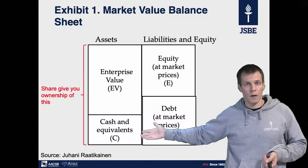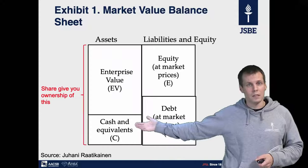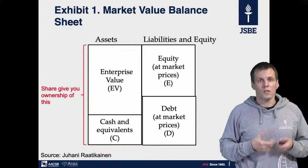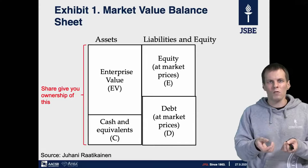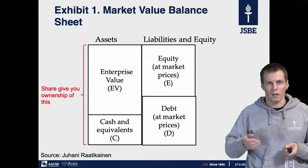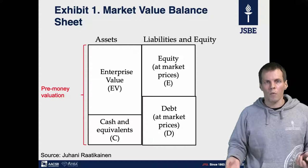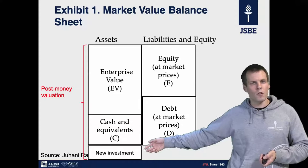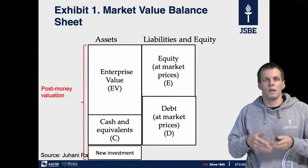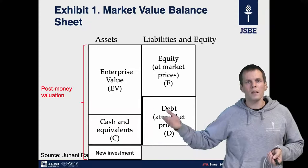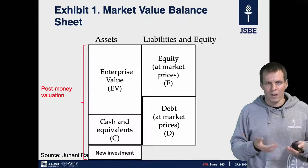A share gives you ownership of the full thing — the enterprise value and also the cash. So if you have one share out of 100 and there is money in the bank, one hundredth of that money is yours. This is the pre-money valuation. When a venture capitalist invests, new stock is issued and the money goes into the target company, so there is more money in the company. That new investment is part of the post-money valuation. The difference between pre-money and post-money valuation is simply the amount the venture capitalist invested.